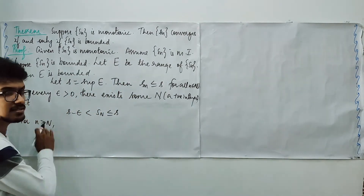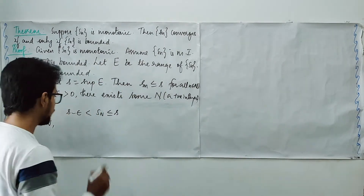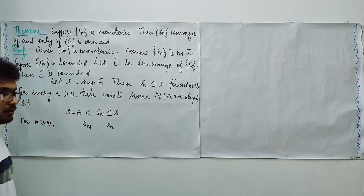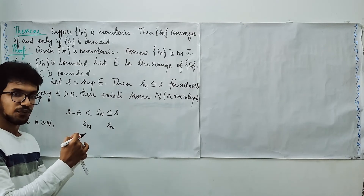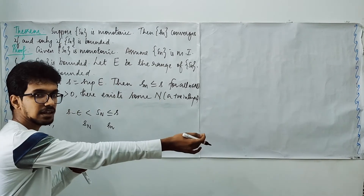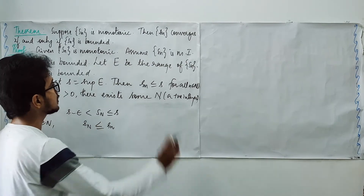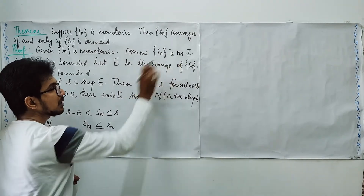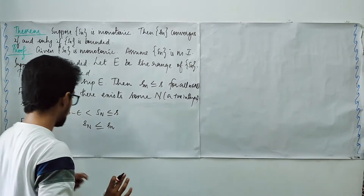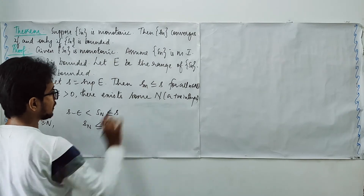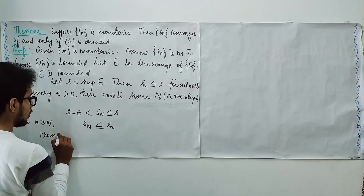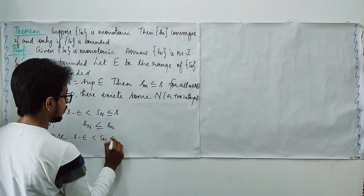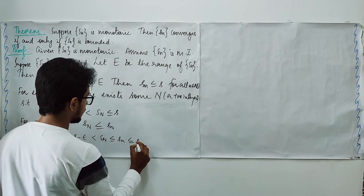So for monotonically decreasing sequences, if bounded, we choose the infimum and follow the same argument, which shows they too are convergent. In summary: a monotonically increasing sequence converges to its supremum if bounded, and a monotonically decreasing sequence converges to its infimum if bounded. If a monotonically increasing sequence is unbounded, its supremum is infinity, so it diverges to infinity. If a monotonically decreasing sequence is unbounded, it diverges to minus infinity. Therefore, monotonic sequences never oscillate — they either converge or diverge. Thank you for watching.